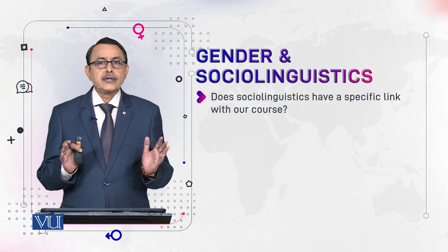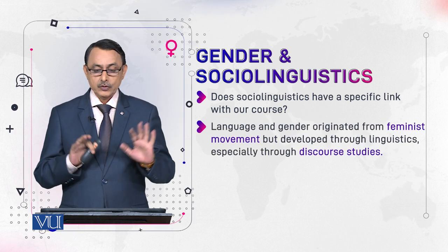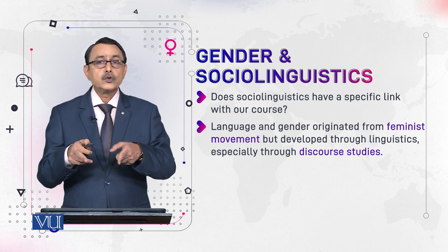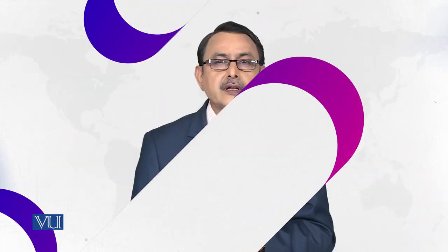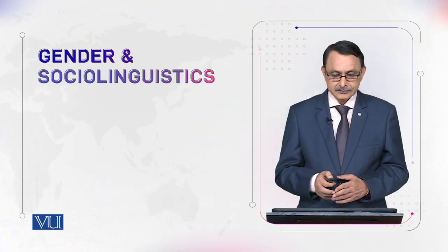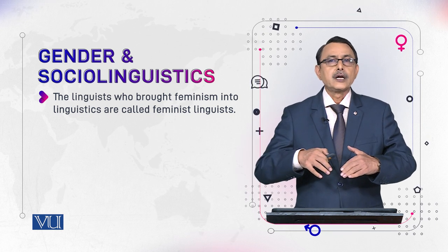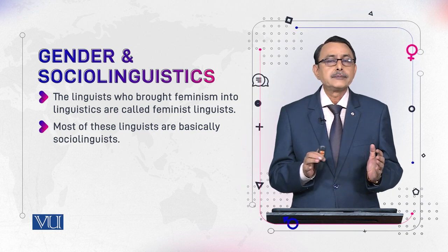Does sociolinguistics have a specific link with our course? Yes, a big yes. Language and gender originated from the feminist movement. That is the origin — our course goes back to feminism, but it developed through linguistics. Feminism was just a starting point. It was linguistics, and especially sociolinguistics, which further boosted and promoted it. The linguists who brought feminism into linguistics we call feminist linguists, and most of these linguists are or were sociolinguists.